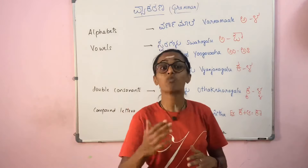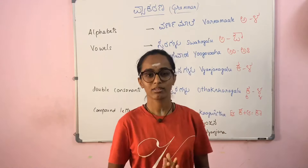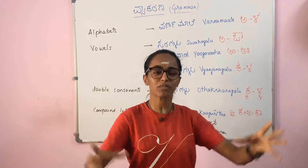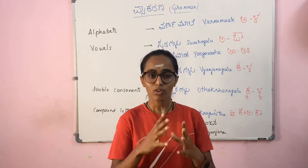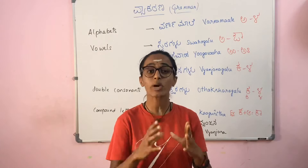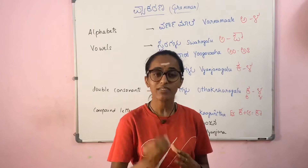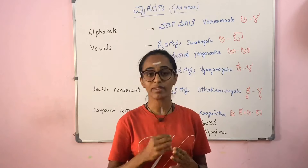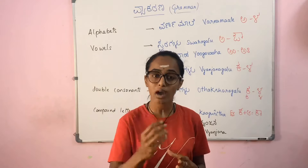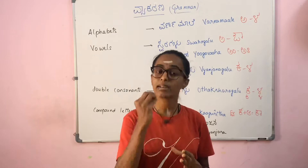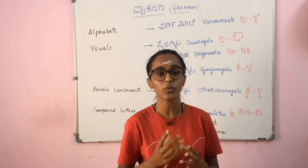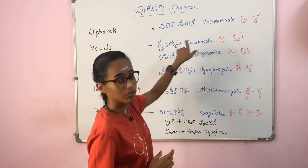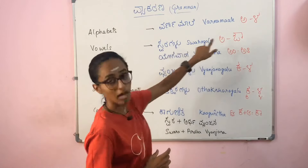Next we have vowels — independent letters of pronunciation. I can pronounce them independently and make many words with the vowels. In Kannada, vowels are called svaragadu. Letters which can be independently pronounced are called svaragadu. From a to au, it's called svaragadu.